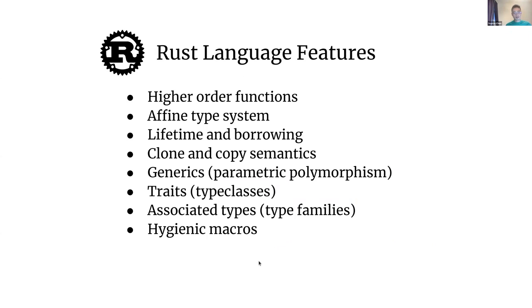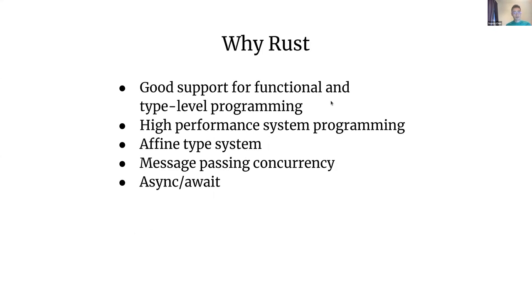I asked on Slack whether anyone needs a quick introduction to Rust, and a few students indicated they would like a quick recap. I will spend a little bit of time highlighting the language features of Rust. Hopefully if you already have experience in other languages like Haskell, ML, or OCaml, this will be familiar to you. I'll also touch on why we might want to choose Rust over Haskell or OCaml to implement session types.